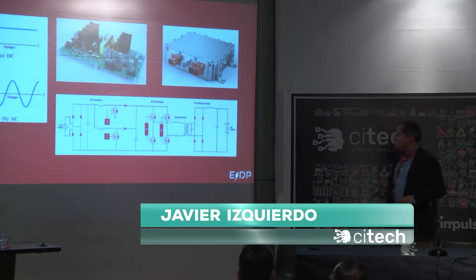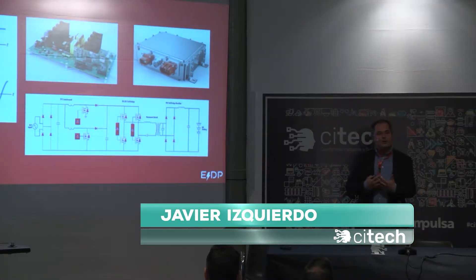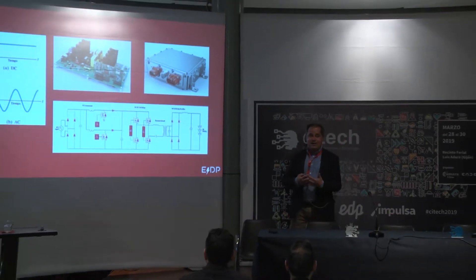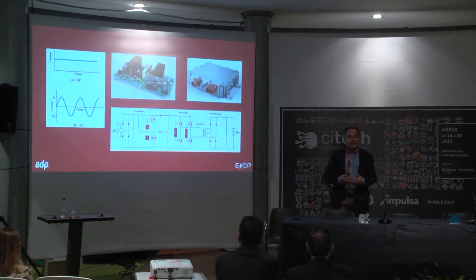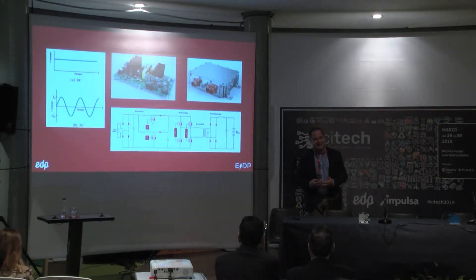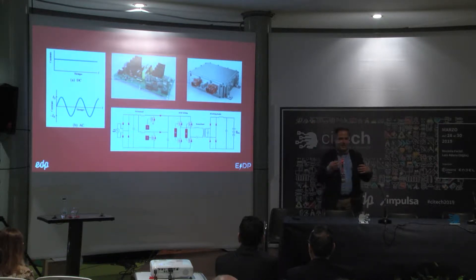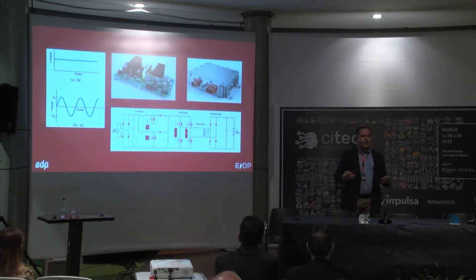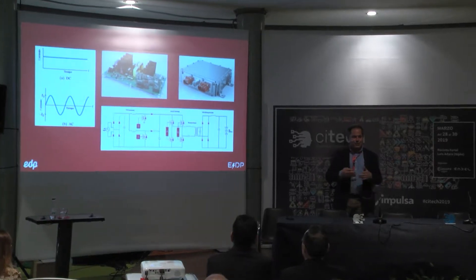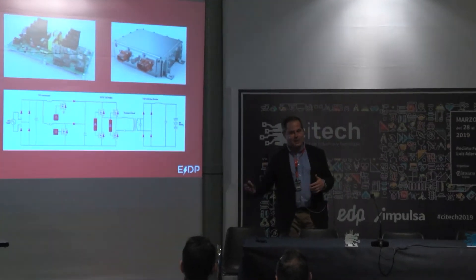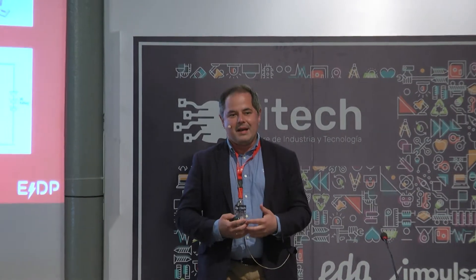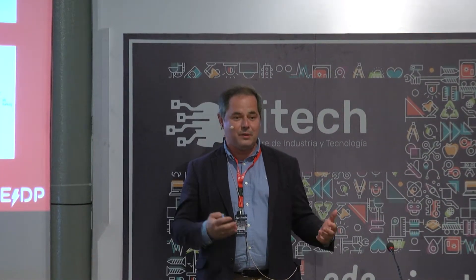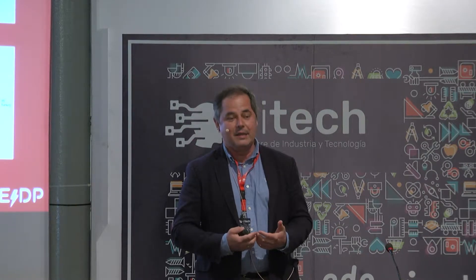¿Por qué tiene todo el sentido del mundo? Porque ahora mismo la movilidad eléctrica, el coche eléctrico, tiene mucho que ver con la corriente continua frente a la corriente alterna, que es la que en el desarrollo industrial prevaleció. Esta es una guerra que viene desde hace muchos años, que iniciaron Edison y Tesla. Uno lo imaginaba en corriente continua, otro en corriente alterna, y al final los dos tenían razón. La corriente continua vuelve a estar de moda porque aparece la batería de litio a un coste ya muy razonable.